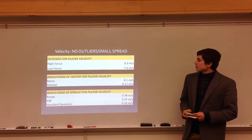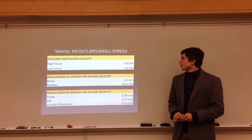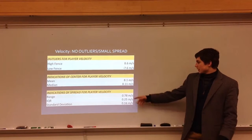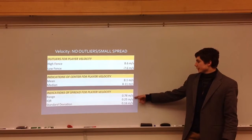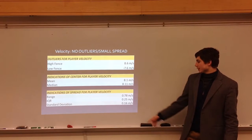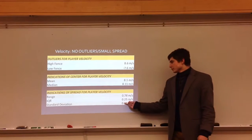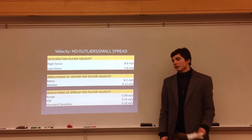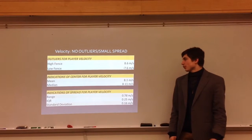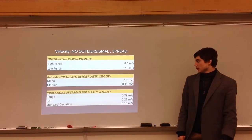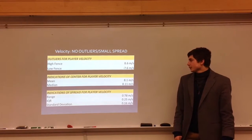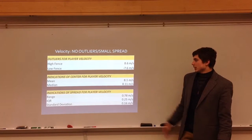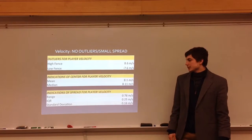It shows a pretty small spread without any outliers. The spread shows a range of only 0.78 meters per second. Although it is small numbers, it's still a pretty small variable. The mean and the median are very close, indicating a pretty tight center.